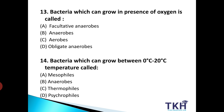Next, question number 13: bacteria which can grow in the presence of oxygen is called — जो सिर्फ oxygen की presence में grow कर सकते हैं उस bacteria को हम क्या कहते हैं? Option A: Facultative anaerobes. Option B: Anaerobes. Option C: Aerobes. Option D: Obligate anaerobes. जो bacteria oxygen की presence में grow करते हैं उसे हम aerobic bacteria — aerobes — कहते हैं। Option C is our answer.